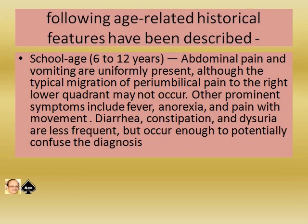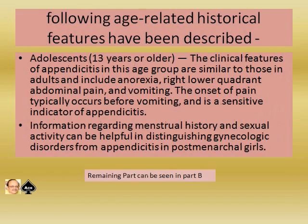In school-age children between 6 to 12 years, abdominal pain and vomiting are uniformly present, although the typical migration of periumbilical pain to the right lower quadrant may not occur. Other prominent symptoms include fever, anorexia, and pain with movement — ask the child if they felt pain while travelling to the clinic. Diarrhea, constipation, and dysuria are less frequent but can confuse the diagnosis. In adolescents aged 13 and older, clinical features are similar to adults and include anorexia, right lower quadrant pain, and vomiting. Pain onset typically precedes vomiting. Menstrual history and sexual activity can help distinguish gynecologic disorders from appendicitis in post-menarchal girls.